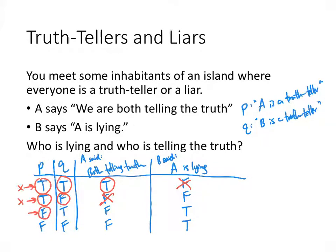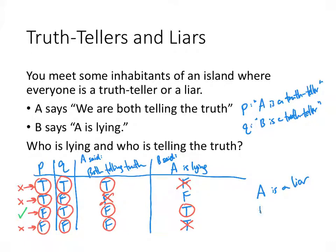In scenario three, A is a liar, B is a truth-teller, A lied, and B told the truth — that works! In scenario four, A is a liar, B is a liar, A lied, but B told the truth — that doesn't match. So our conclusion is that the only scenario that fits is scenario three: A is a liar and B is a truth-teller.